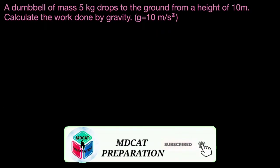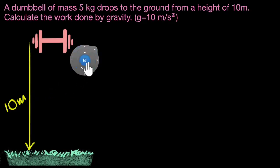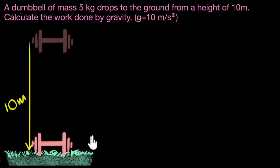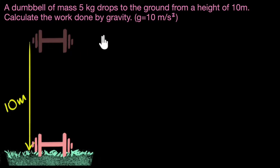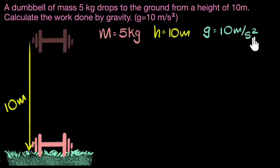Let's quickly go ahead and draw the situation. So we have a dumbbell whose mass is five kilogram. It's dropped from a height of 10 meters, so it just falls down. Let's write down what is given: mass is five kilograms, height is 10 meters, and g is 10 meters per second squared.